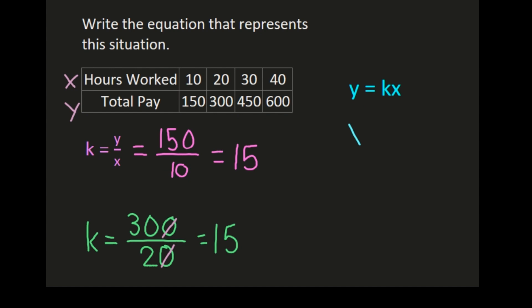So now that we've determined it's a proportional relationship we know that we'll use this formula y equals kx, where k is that constant of proportionality that we just calculated, 15. So we will put 15 in place of k. So our equation will be y equals 15x.